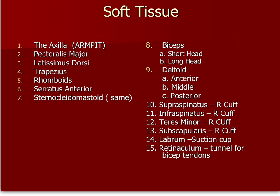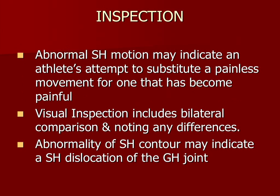Here are some soft tissue landmarks that you must know. Please identify them on slide 5. As we have said many times, always check for abnormal motion, especially in the shoulder. This could occur because of pain or loss of function. Always compare bilaterally, and always see if something looks so abnormal that it could be a dislocated glenohumeral joint.